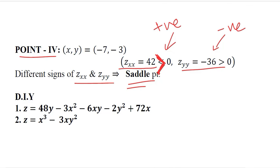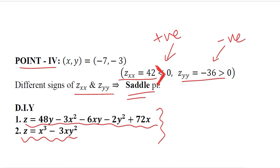We can do further examples for the sake of practice. Two additional functions are provided which can be solved to find maximum, minimum, inflection, and saddle points. I hope this serves well for your rehearsal and better understanding of optimization of functions with more than one choice variable. Thank you.